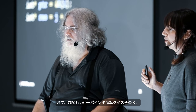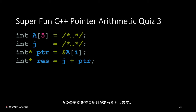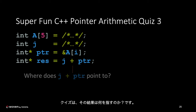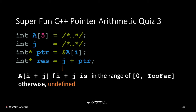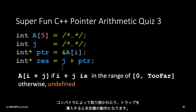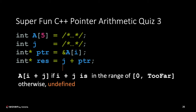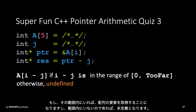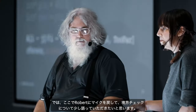Super fun C++ pointer arithmetic quiz number three: we've got an array with five elements, an integral type, a pointer into the array, and we want to add an integer to the pointer. What does the result point to? It really depends on whether the result of pointer plus j is within the range from zero to the one-past-the-end element — otherwise it could be anywhere, it could be removed by the compiler, it could introduce a trap, it's undefined. This also holds for subtraction: if you're in bounds you get the array element; if you're out of bounds the result is undefined.